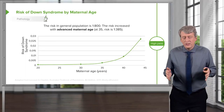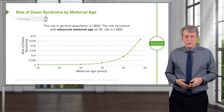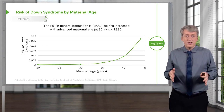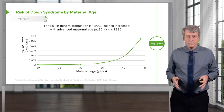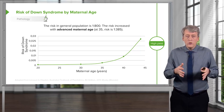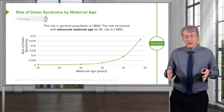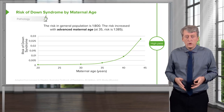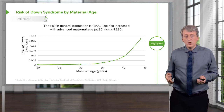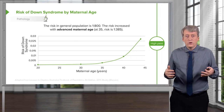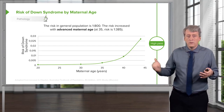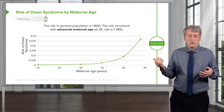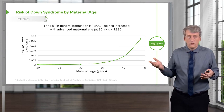Now let's look at risks for Down syndrome. The biggest risk factor to consider is maternal age. As women get older, it becomes increasingly likely for them to create eggs with an extra copy of chromosome 21. We generally consider age 35 as the point at which risk starts to rise significantly, and after 40, it increases dramatically.